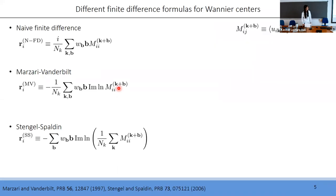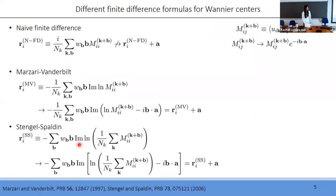In the literature there are several different formulas proposed. The first is the naive formula. There is also the formula by Marzari and Vanderbilt, where they use the complex logarithm of M instead of M itself. Later, Stengel and Spalding proposed a slightly different formula where the order of the logarithm and the sum over k-points are reversed. One can easily show that only the latter two formulas are translation invariant, while the naive one is not. This arises because the multiplicative phase factor in M becomes an additive factor thanks to the complex logarithm, which does not happen in the naive formula.